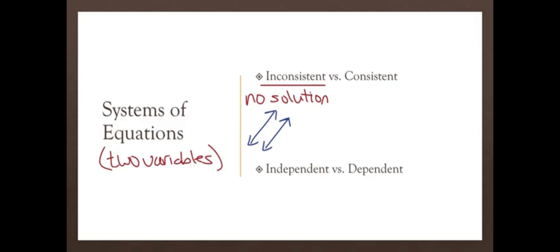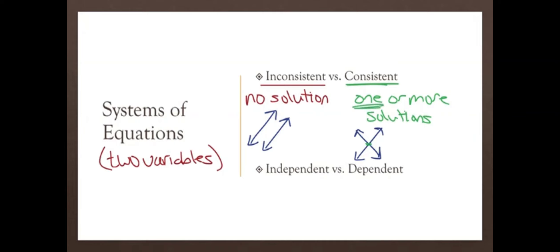Consistent means one or more solutions. Usually we like the one where it's just one solution — that's where the lines cross, where they actually intersect each other. If we have more solutions, meaning infinite, it means we'll have a line and another equation that is exactly the same line. So we'd have two identical lines, meaning all of those solutions would be answers — an infinite amount. That's pretty rare because you just simplify it and it's the same equation.